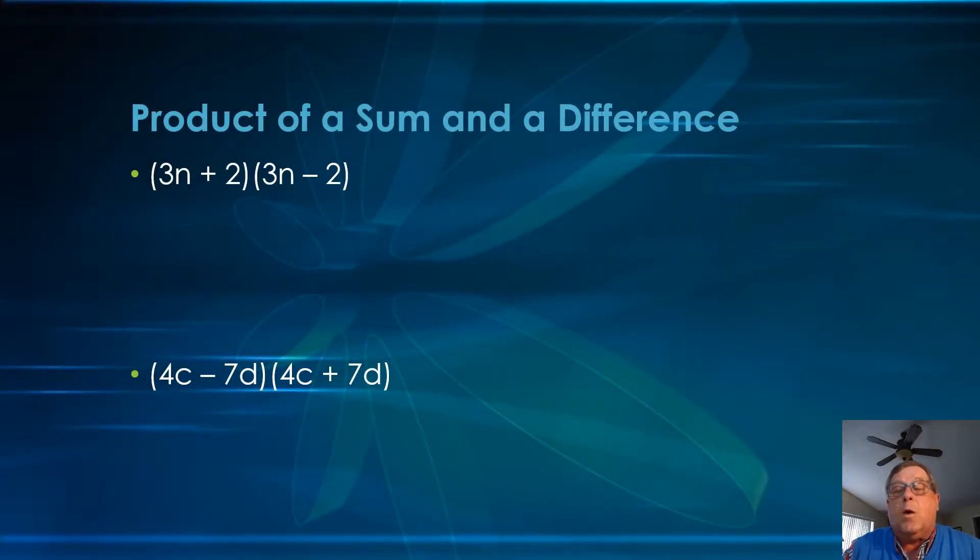After looking at the square of a sum and the square of a difference, we're now going to look at this third special situation or special product called the product of a sum and a difference. It takes on this characteristic here.